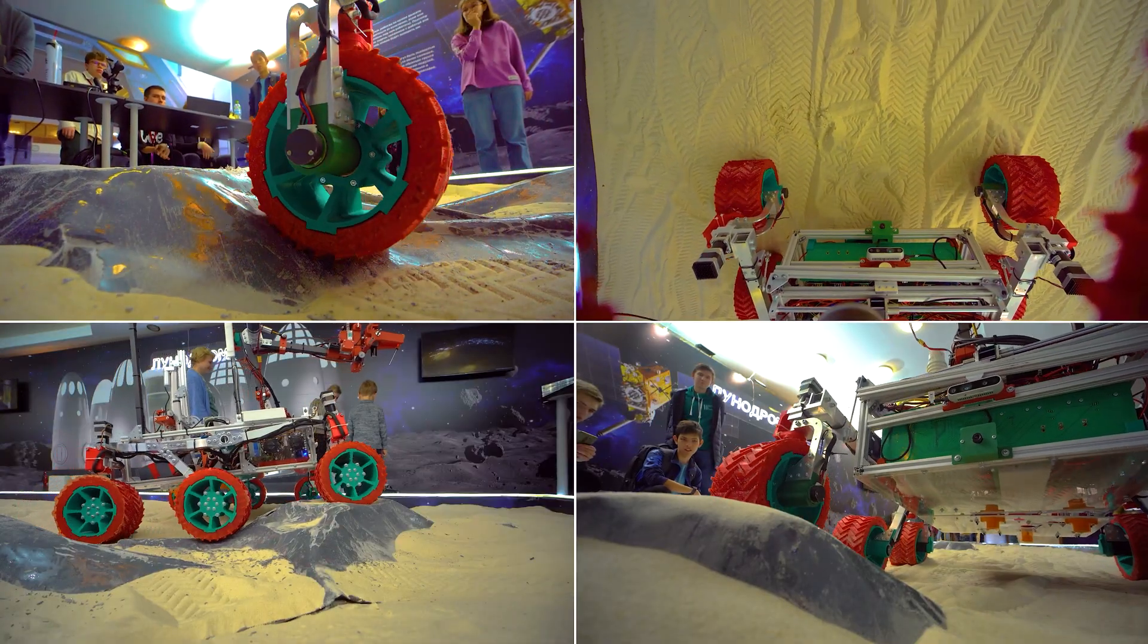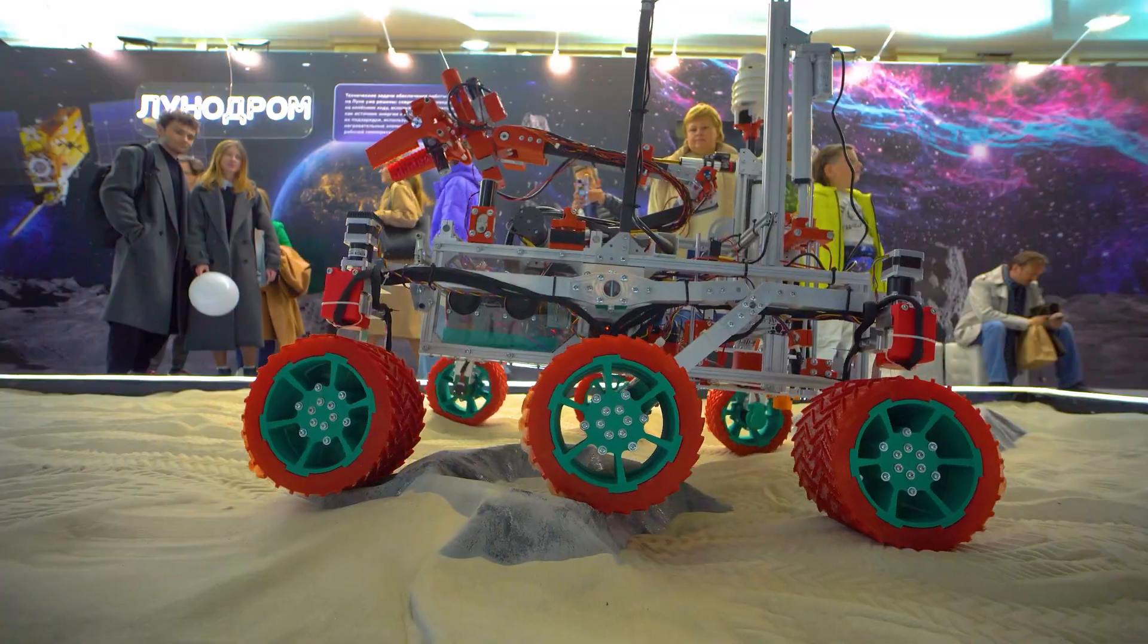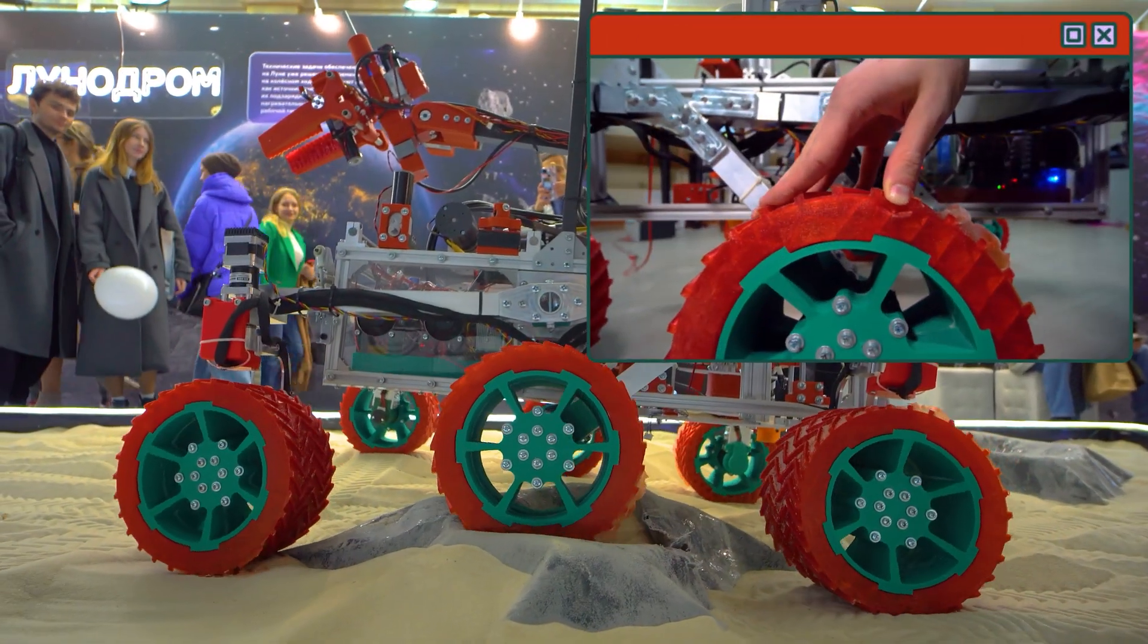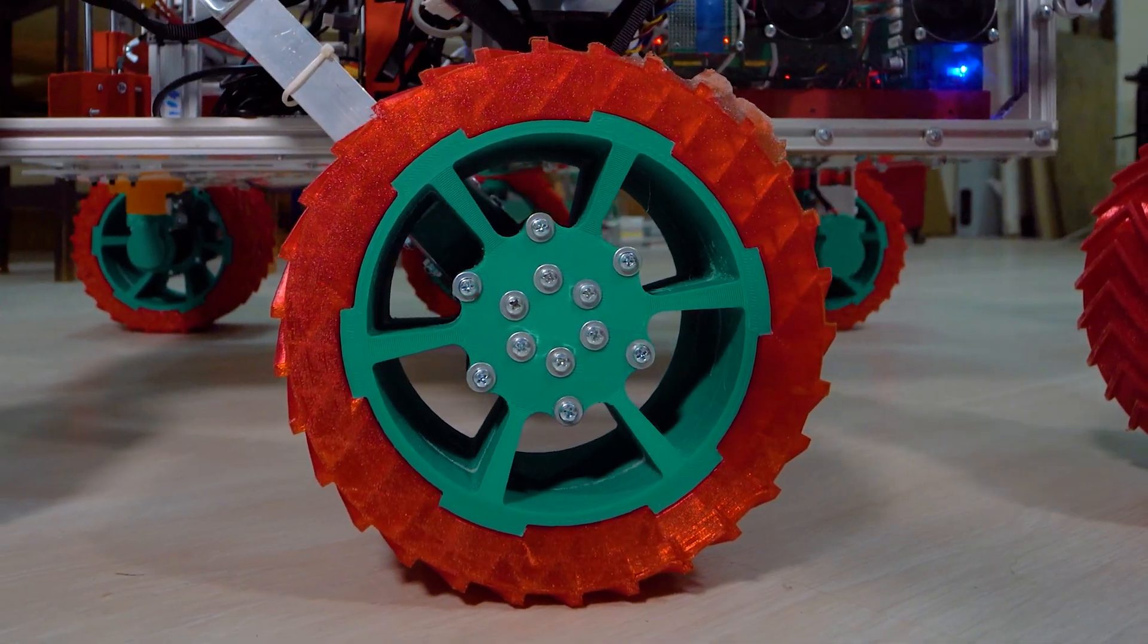We introduced significant upgrades for our proven rocker bogie suspension. White tires are 3D printed from soft TPU plastic. Tire thread design is inspired by that of the Curiosity rover. Discs are made from ABS.